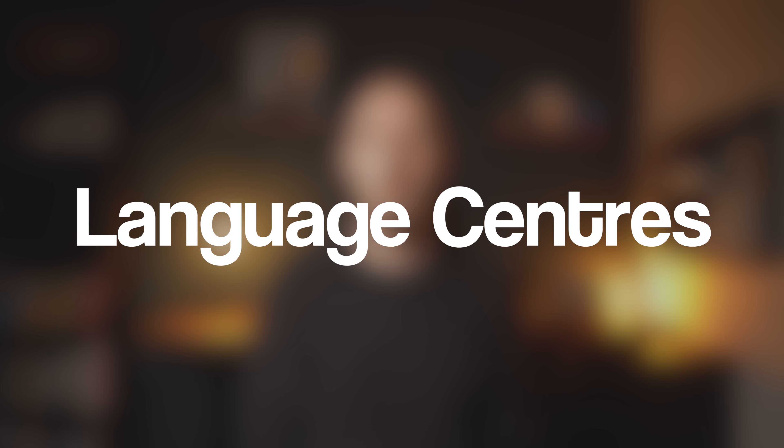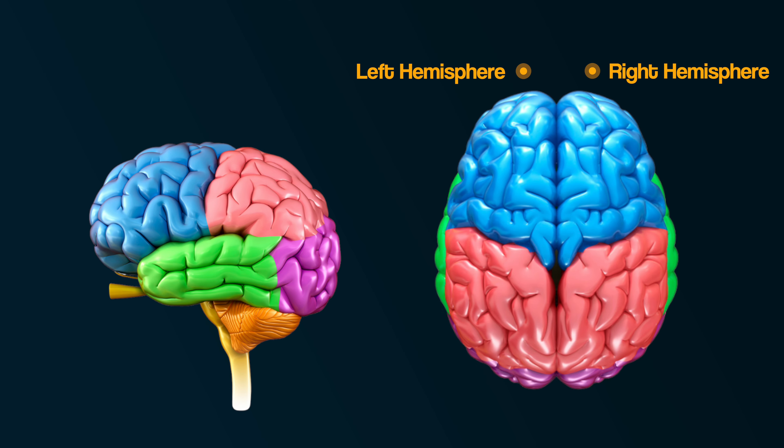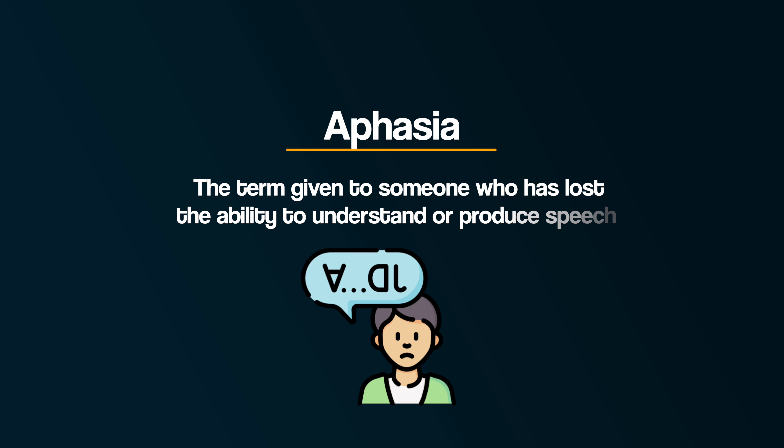When it comes to the language centres in the brain, we find something even more interesting. Not only does the brain have different lobes, but it also has two hemispheres — a left and a right hemisphere. We'll explore this further in another video on hemispheric lateralisation. But for now, we can learn something interesting about localisation in two famous cases of aphasia. Aphasia is the term given to someone who has lost the ability to understand or produce speech.